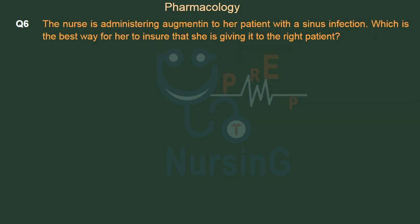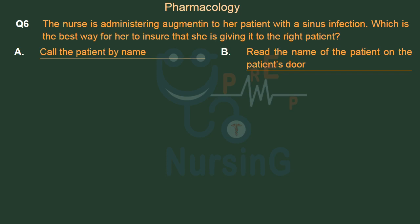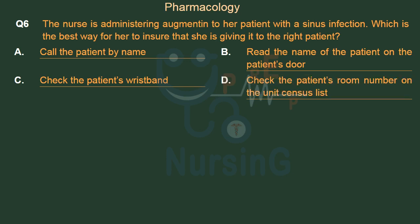The nurse is administering augmentin to her patient with a sinus infection. Which is the best way for her to ensure that she is giving it to the right patient? Option A: Call the patient by name. Option B: Read the name of the patient on the patient's door. Option C: Check the patient's wristband. Option D: Check the patient's room number on the unit census list.